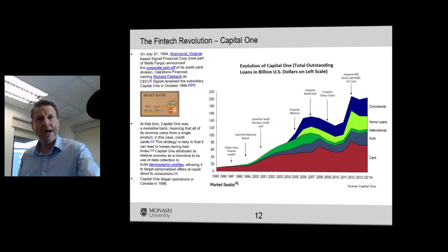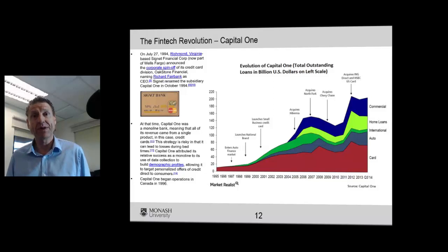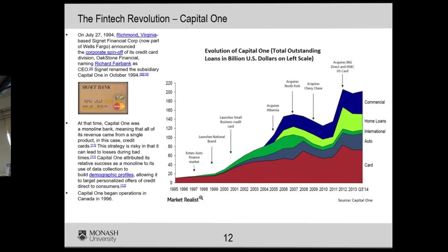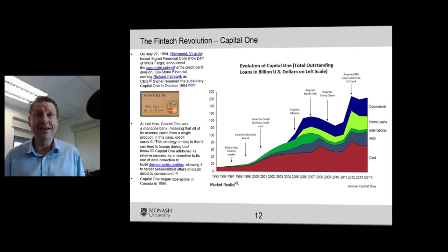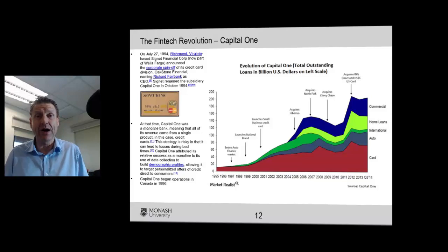What about Capital One? Back in 1994, they were the 350th largest bank in the world — in other words, very, very small. What about today? They're one of the largest — actually the largest credit card issuing bank in the world. How did they get from 350th to the largest today? It was through this whole idea of big data.